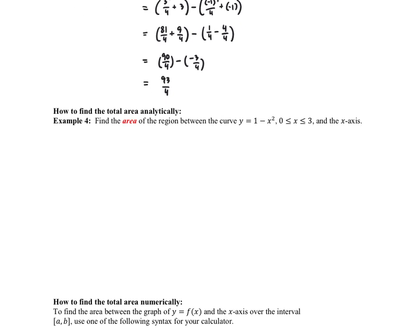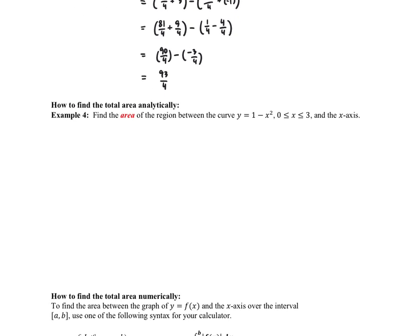Now let's talk about total area and how to find it analytically. We need to know the difference between total area and net area. Total area versus net area — which will later correspond to the difference between total distance and displacement.